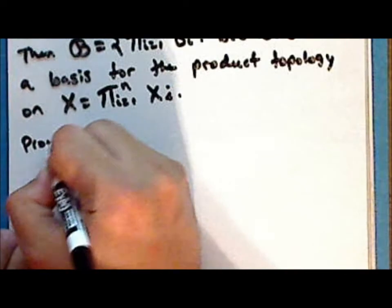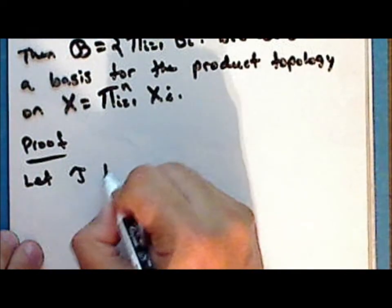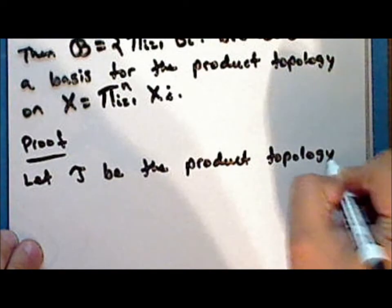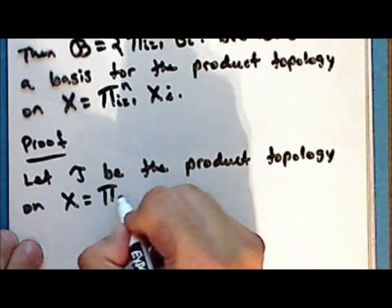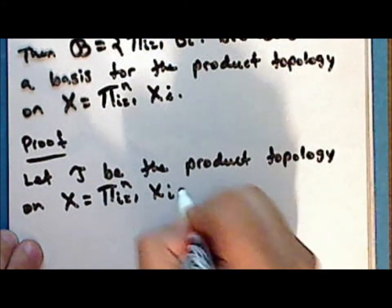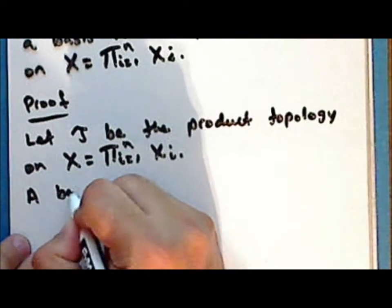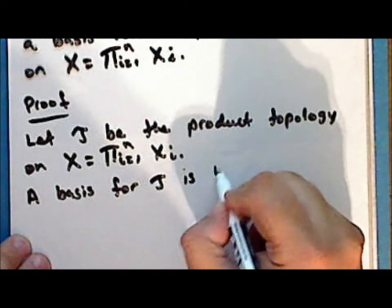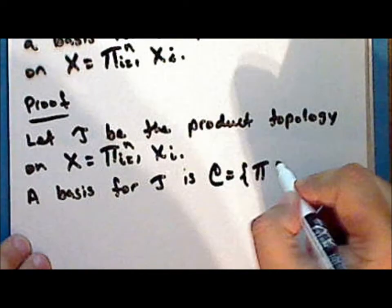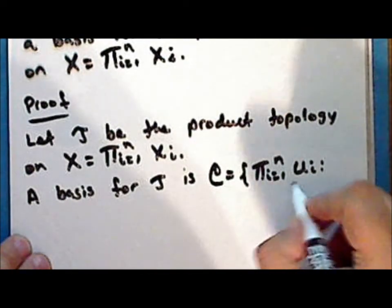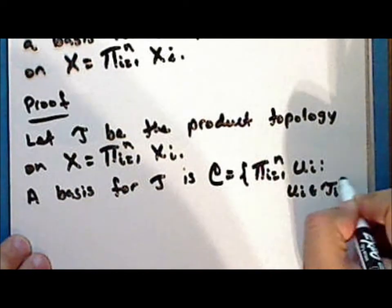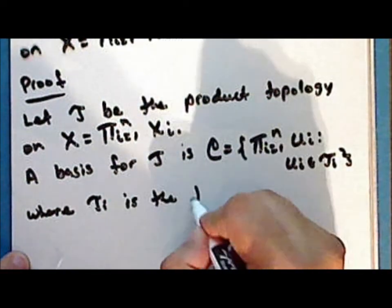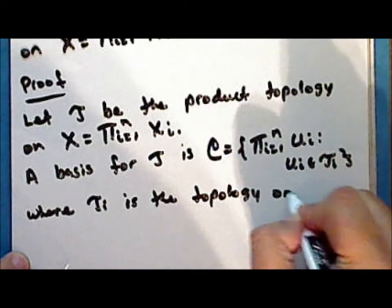Proof: Let tau be the product topology on the product set. Now a basis for the product topology is the collection script C, consisting of finite products of the sets U sub i, where U sub i is in the topology tau sub i, and tau sub i is the topology on the set X sub i.